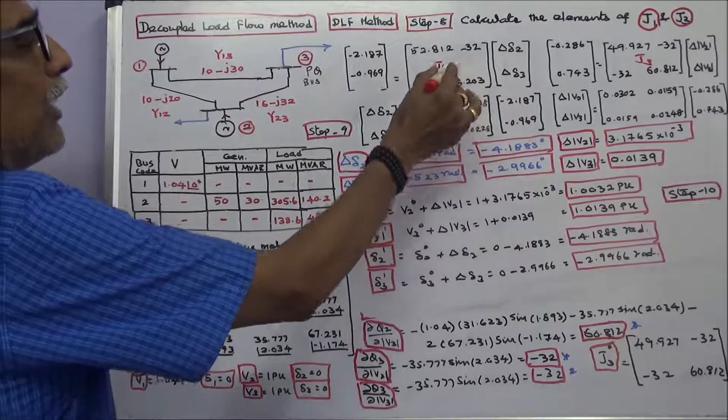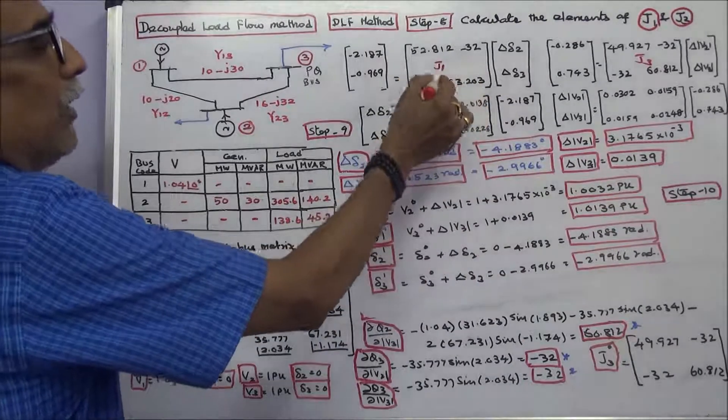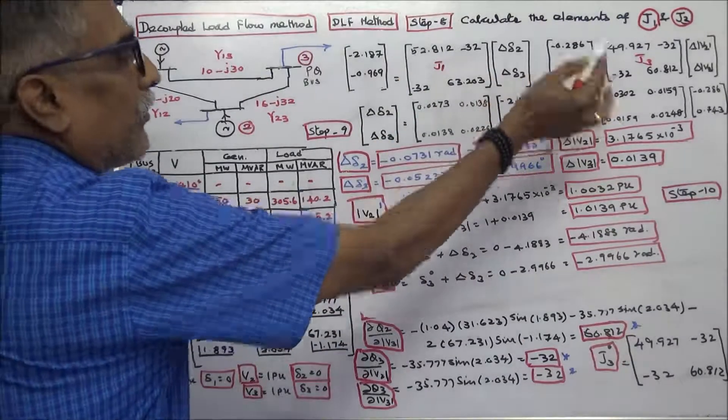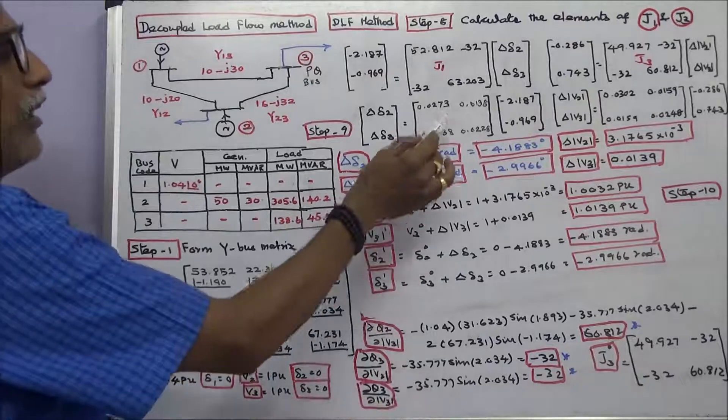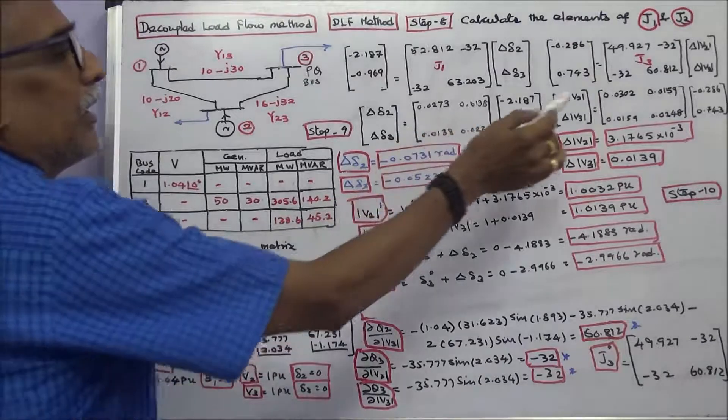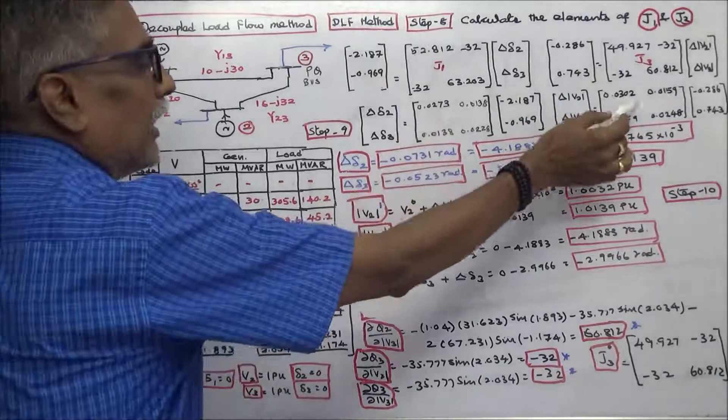Step 8: Calculate the inverse of J1 and the inverse of J3. The inverse of J1 and the inverse of J3 are shown here.